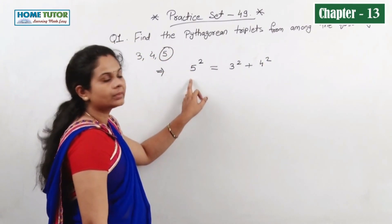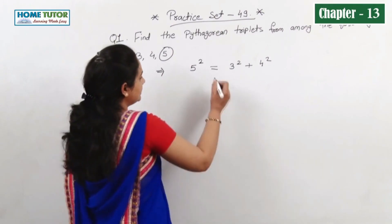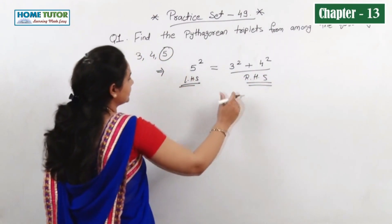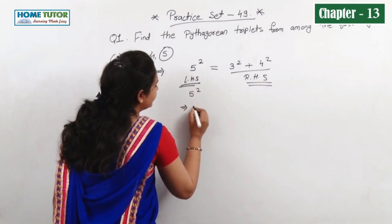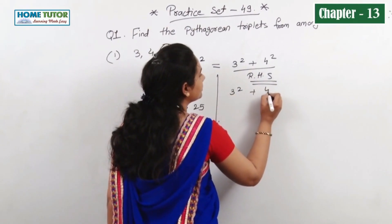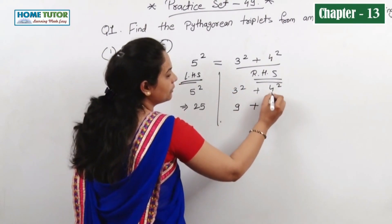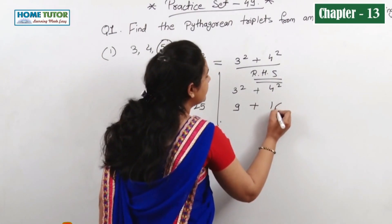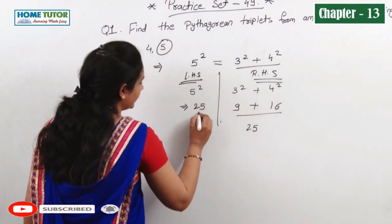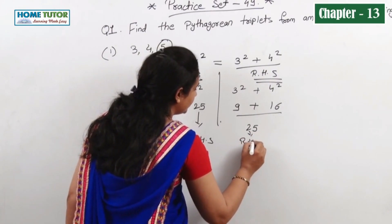The square of the biggest number should be equal to the sum of the squares of the remaining two numbers. Let's check. LHS: 5 squared equals 25. RHS: 3 squared plus 4 squared — 3 squared is 9, and 4 squared is 16. Adding them: 9 plus 16 equals 25. So LHS is 25 and RHS is 25.